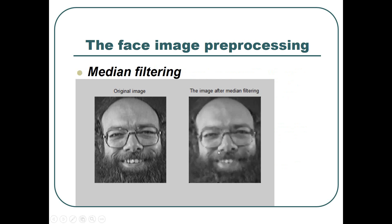The third method is the median filter. This method sorts the gray values of pixels according to gray level and utilizes the median gray value to replace the gray value of a certain pixel. So, analyzing the figure, we know that the gray values after median filtering become closer to each other, and therefore the noise is suppressed effectively. Also, the processed image does not generate obvious blurring.